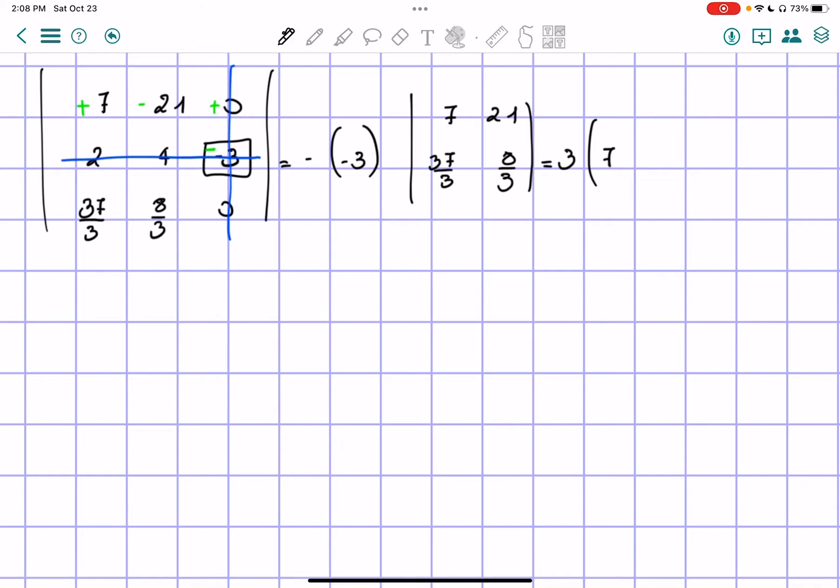So we have 7 times 8 over 3 minus 21 times 37 over 3.